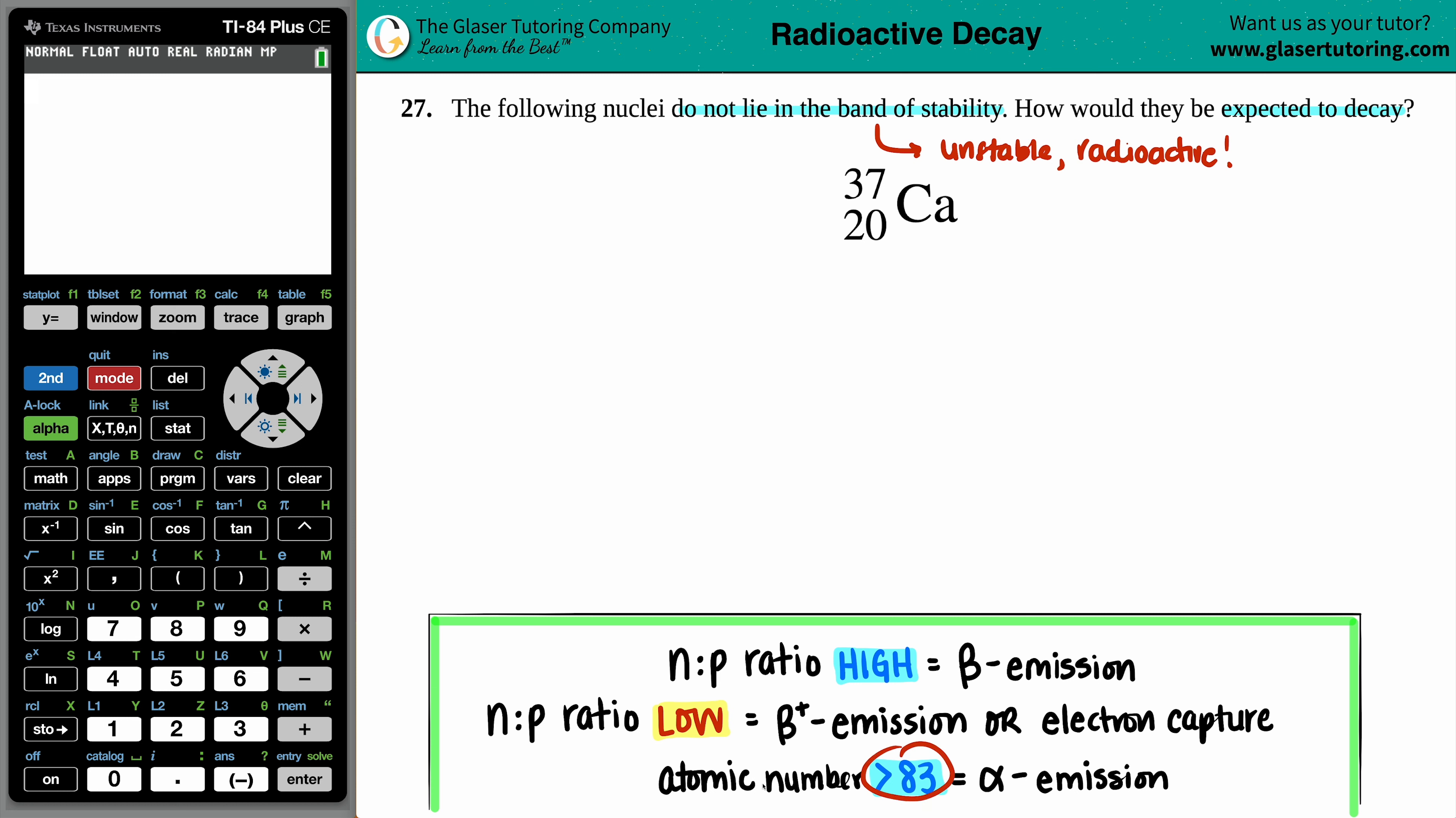Now first things first, always look at your atomic number first. If your atomic number is greater than 83, it's a huge nuclei, it's got to lose mass fast. That's alpha emission because you're losing a helium atom. But I'm dealing with a 20 here, so we're good. So we got rid of the alpha emission.